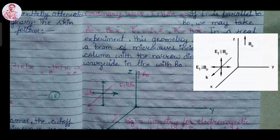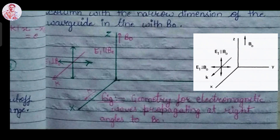If electric field vector E is parallel to B₀, we take vector B₀ equal to B₀ ẑ, electric field vector E equal to E ẑ, and propagation vector k equal to k x̂, where ẑ and x̂ are the directions of the electric field and propagation vectors respectively. In a real experiment, this geometry is approximated by a beam of microwave incident on a plasma column with the narrow dimension of the waveguide aligned with vector B₀. This figure shows the geometry of electromagnetic waves propagating at right angles to B₀, meaning vector k is perpendicular to vector B₀.